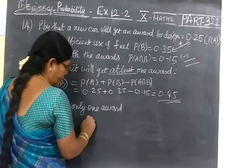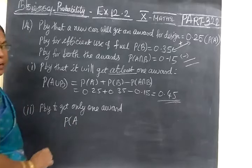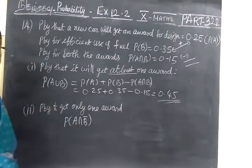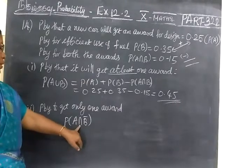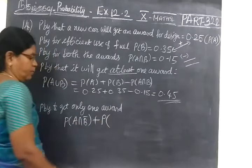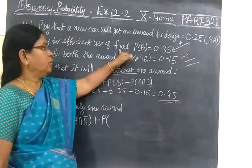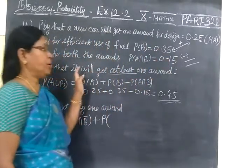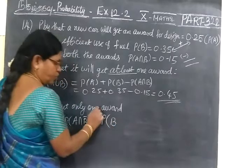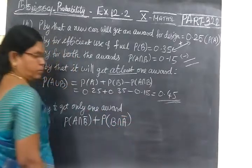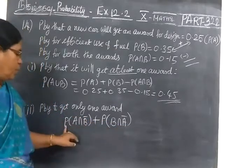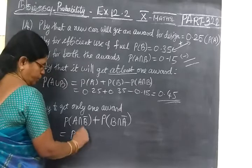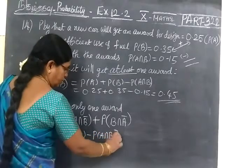So now you can write, suppose P of - if they give award for A, first one A means they won't give award for B. That means you can write A ∩ B̄ plus, next one, if they give award for fuel, the award for design is not allowed because they are giving award only for anyone. So you write, if they give it for B, then A is not allowed. So not allowed means Ā. So P(A ∩ B̄) + P(B ∩ Ā). So this is equal to P(A) - P(A ∩ B), we know the formula, plus P(B) - P(A ∩ B).